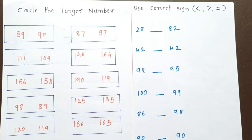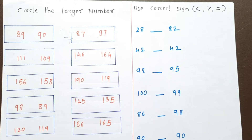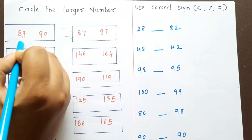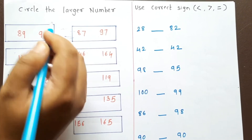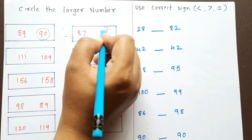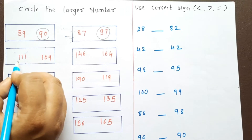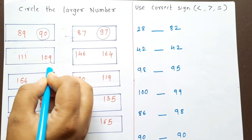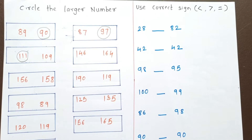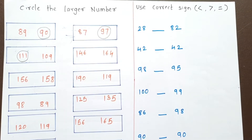In our next worksheet, we have to circle the larger number. We have a set of numbers, so we have to circle the bigger number. 89 is smaller than 90, so 90 is the bigger number. 87 and 97 — 97 is the big number. 111 and 109 — 111 is the big number. Identify and circle the bigger number.